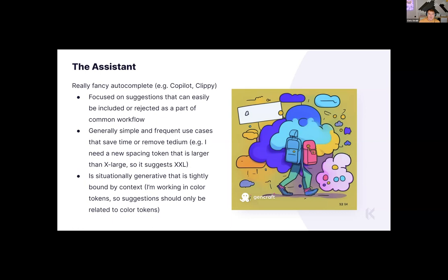Moving on — the Assistant is another really interesting one, all about being like Copilot. This autocompletes things, makes you move more quickly through simple tasks. Common workflows: I need a new spacing token that's extra large, so it suggests extra-extra-large. I know primary buttons often have an icon attached, so let me add an icon prop to this primary button component. Lots of things the assistant does are all about autocomplete functionality or extending the basic work you're doing.